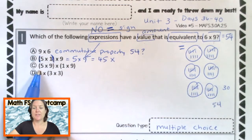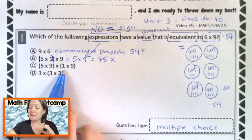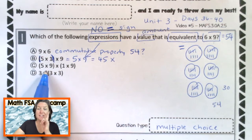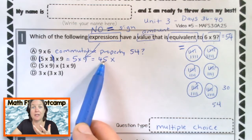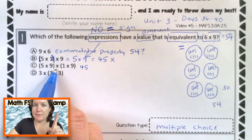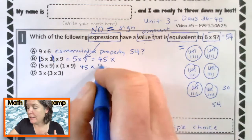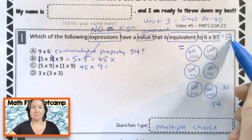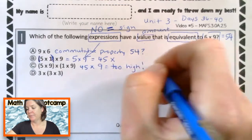Now let's look at choice C. Here we have parentheses that say solve me first for five times nine, and then another pair — solve me first. So we solve five times nine first, then one times nine. Five times nine is 45. And then 45 times nine — be careful with your signs — one times nine is nine. And 45 times nine is going to get us a huge number way higher than 54. So here we can write 'too high' and eliminate.